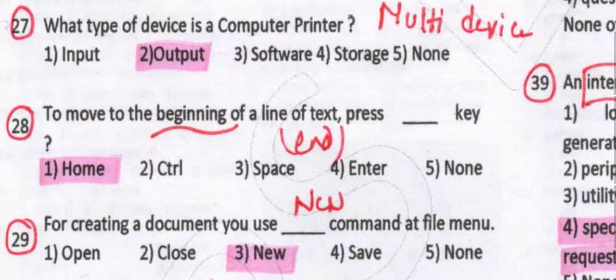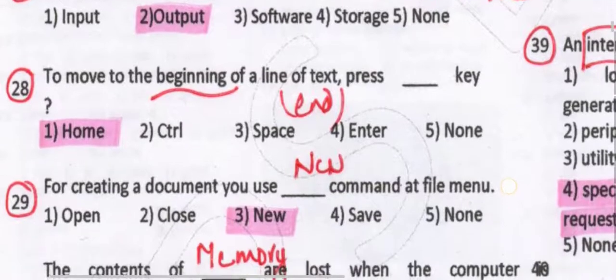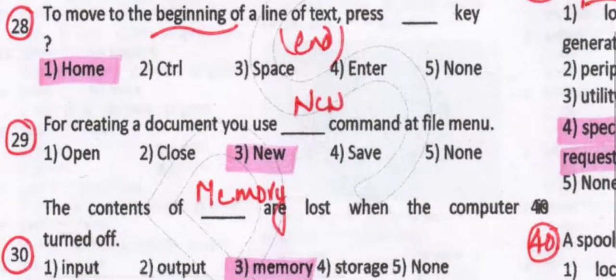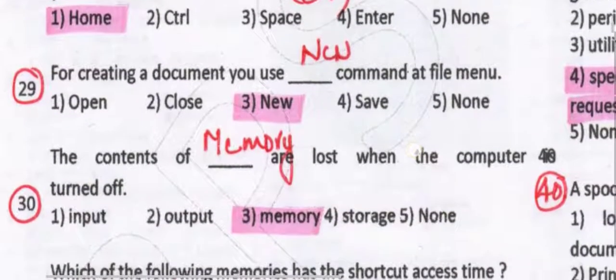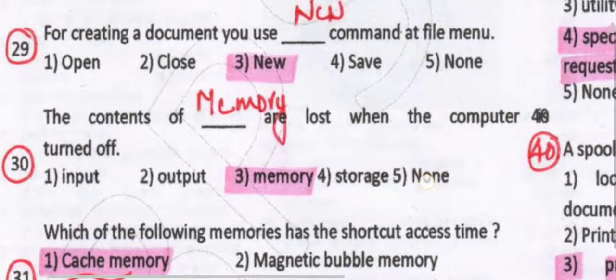To move to the beginning of a line of text, press the Home key. Please remember: for the beginning of a line of text, you press the Home key. For initially creating a document, you use the New command at the File menu — you use New, and then you can rename it.